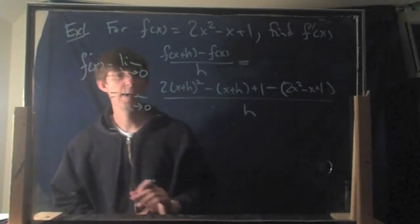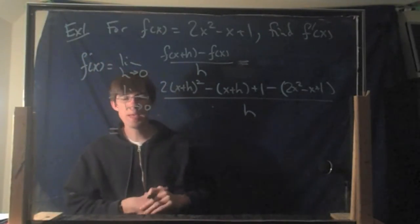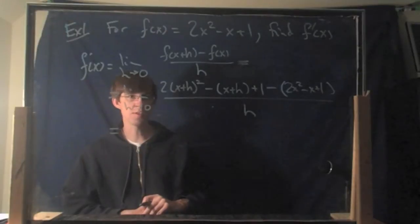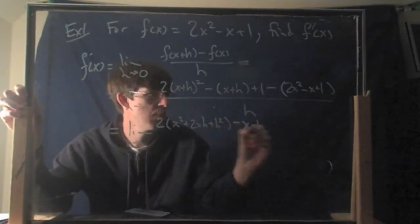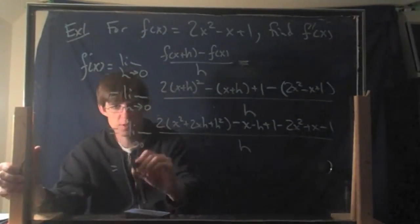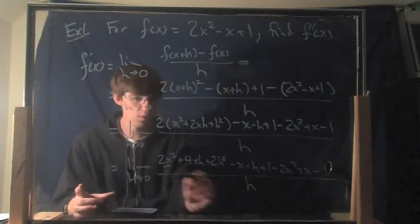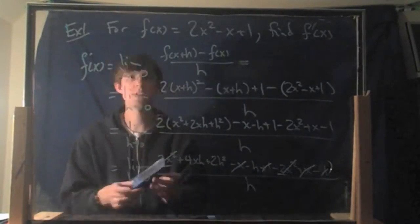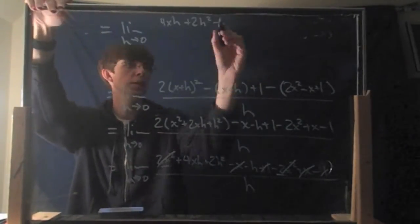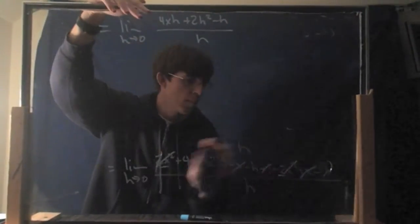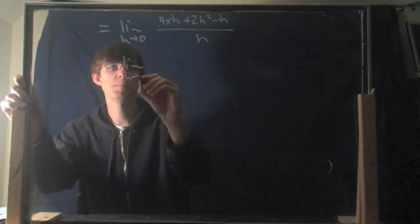Now it's a matter of expanding things and canceling things. The first thing you can do is FOIL the (x+h)² — it's exactly like the previous problem — giving 2x² + 2xh + 2h² ... and what's left is 2x² + h.